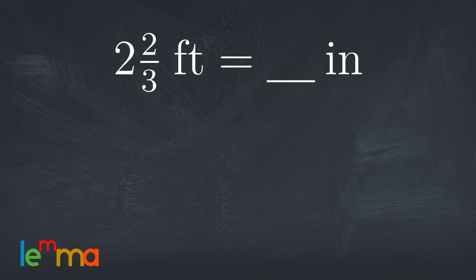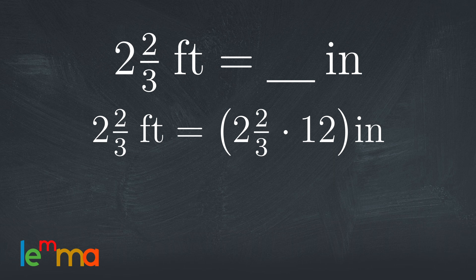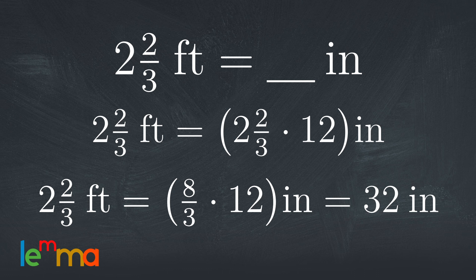Since we don't have feet and inches mixed together, all you need to do is multiply this quantity by 12, and we find that 2 and 2/3 feet is 2 and 2/3 times 12 inches. In other words, it's 8/3 times 12, or 32 inches.